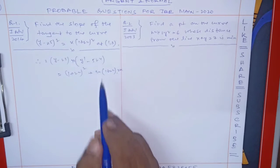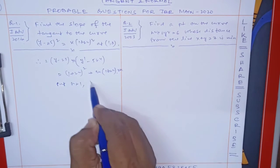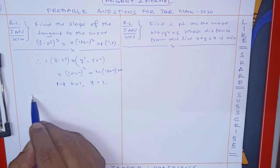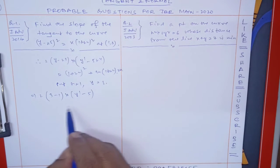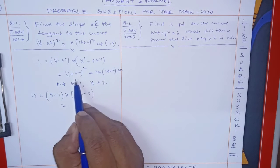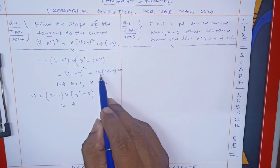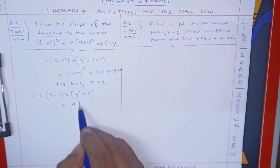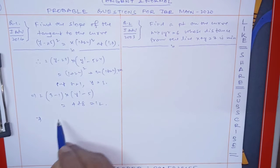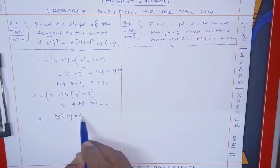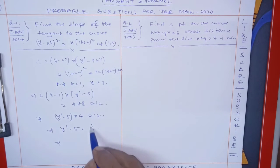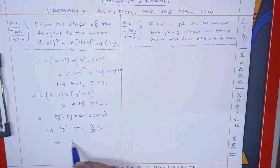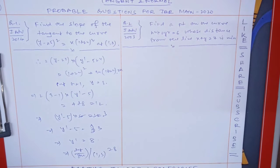Now put x equal to 1 and y equal to 3. So this is 2 into 3 minus 1 into y dash, x is 1, so that is 5. This equals (1+1)² = 4, then 4 into 2 = 8. So 12 minus 5 times 4 = 12, giving y dash minus 5 = 1/3. So y dash equals 8. Therefore dy/dx at the point (1,3) equals 8.